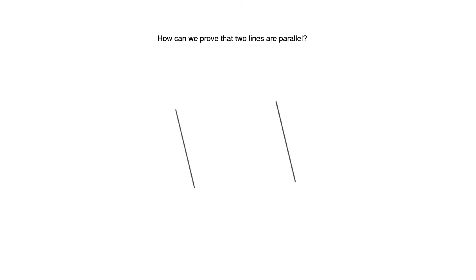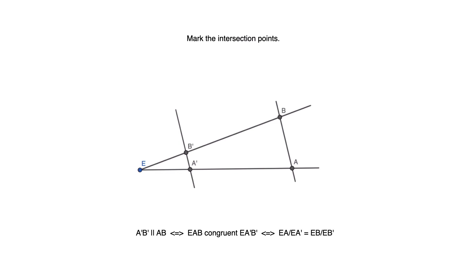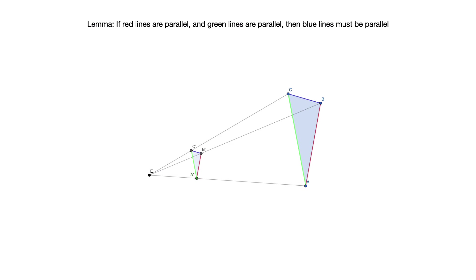How can we prove that two lines are parallel in general? One way is to choose a point E and draw two rays that cross the lines, then mark the intersection points. The lines are parallel precisely when the triangles EA'B' and EAB are similar, and that is precisely when the ratio EA over EA' is equal to the ratio EB over EB'. Let's go back to our network in the real plane and show the following lemma: if the red lines are parallel and the green lines are parallel, then the blue lines must also be parallel.